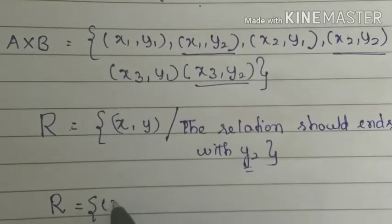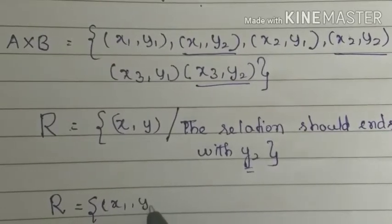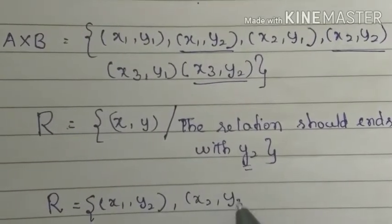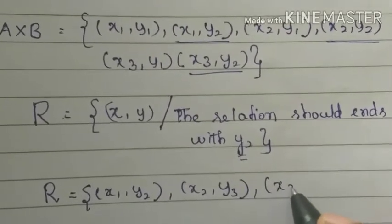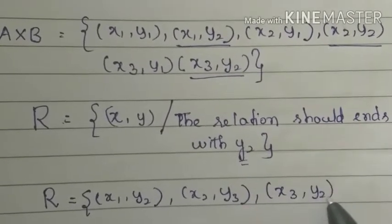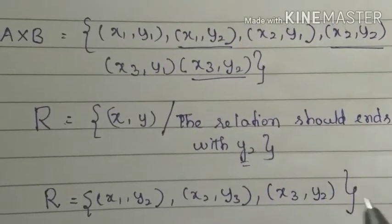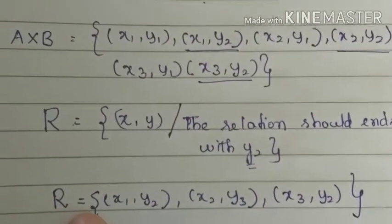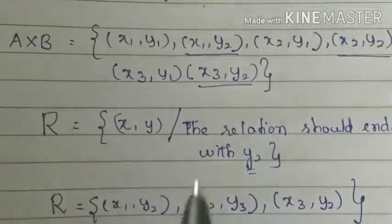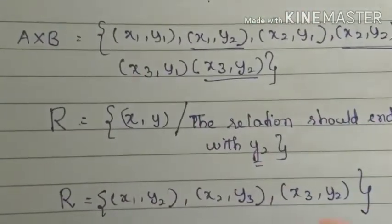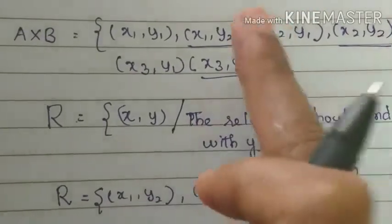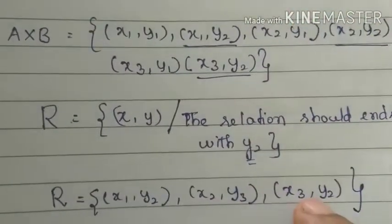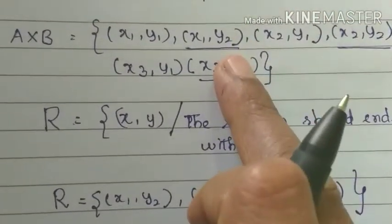So then the pairs ending in y2 are: (x1,y2), (x2,y2), (x3,y2). This is the end of y2. This relation R is a subset of A cross B. So (x1,y2) belongs to A cross B, (x2,y2) belongs to A cross B, and (x3,y2) belongs to A cross B.